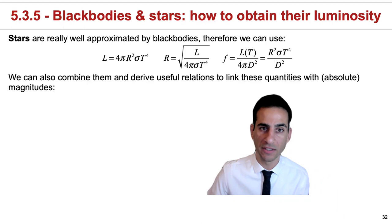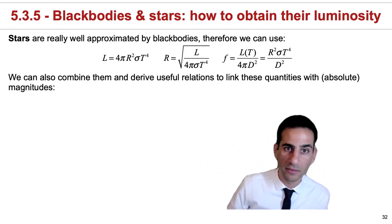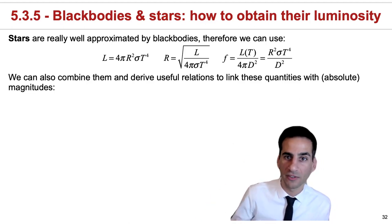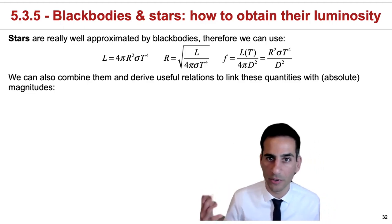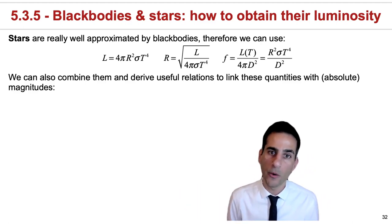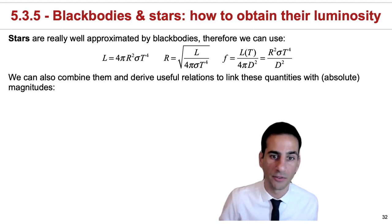Another thing that we can do with these important equations that you have on top, that will tell you how to get the luminosity of a blackbody, how to get the radius of a blackbody, and what is the flux of a blackbody given some temperature, radius, and distance, we can also link those equations with magnitudes, both absolute and apparent magnitudes.